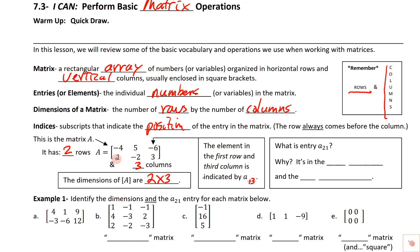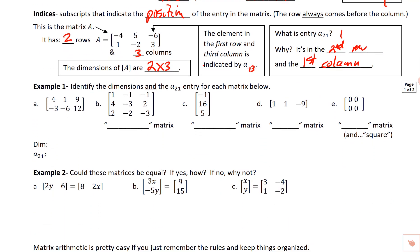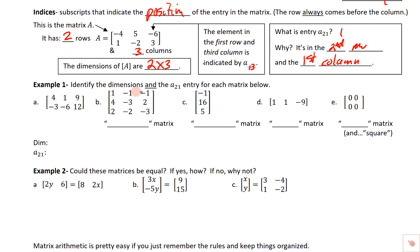A-sub-two-one means second row, first column — so that entry is a one. Now for these examples we're going to identify the dimensions and the a-two-one entry. Looking at the first one, it's got two rows — we count horizontal rows first — so this is a two by three, just like the one above.